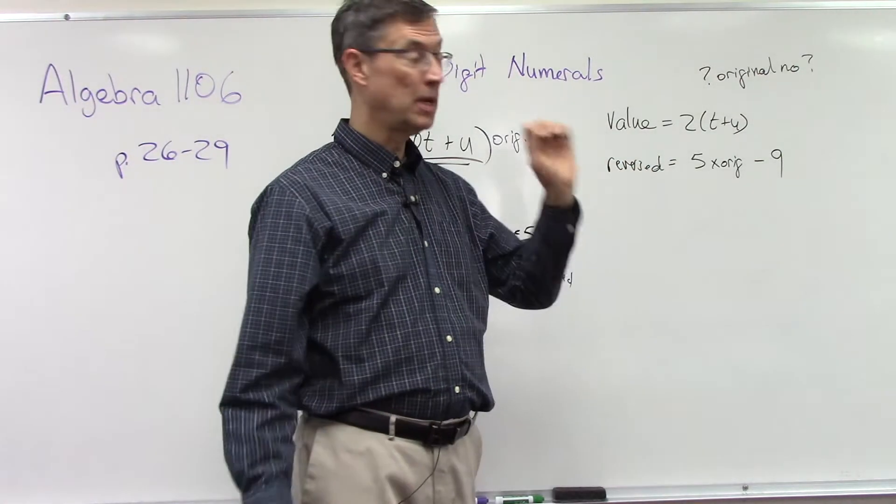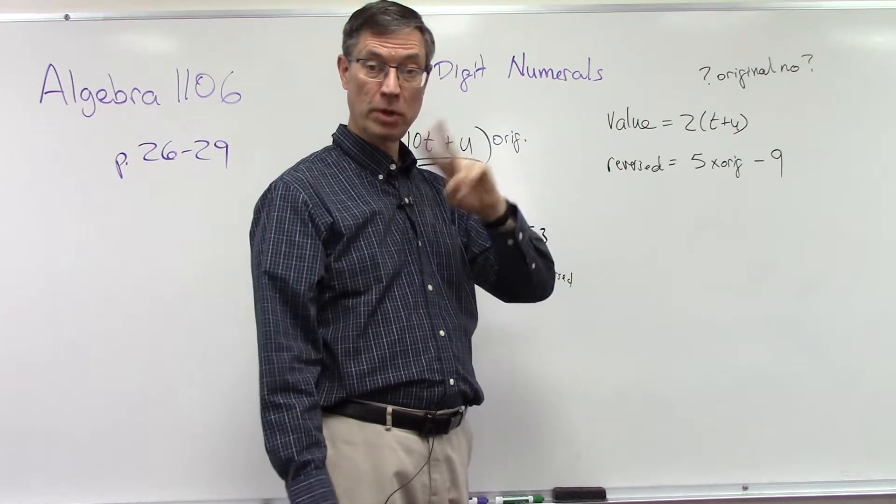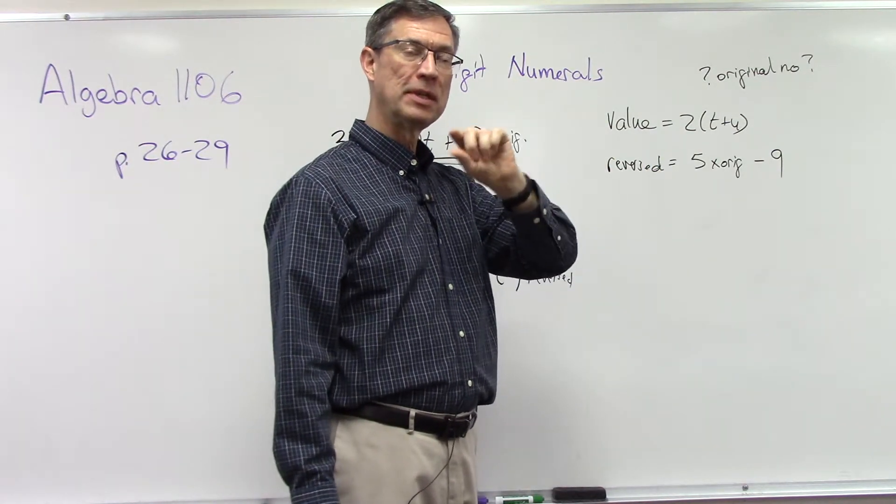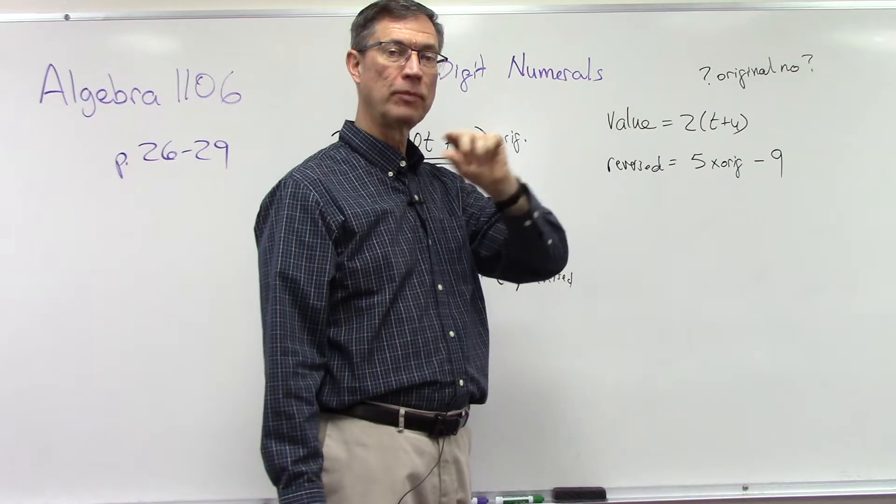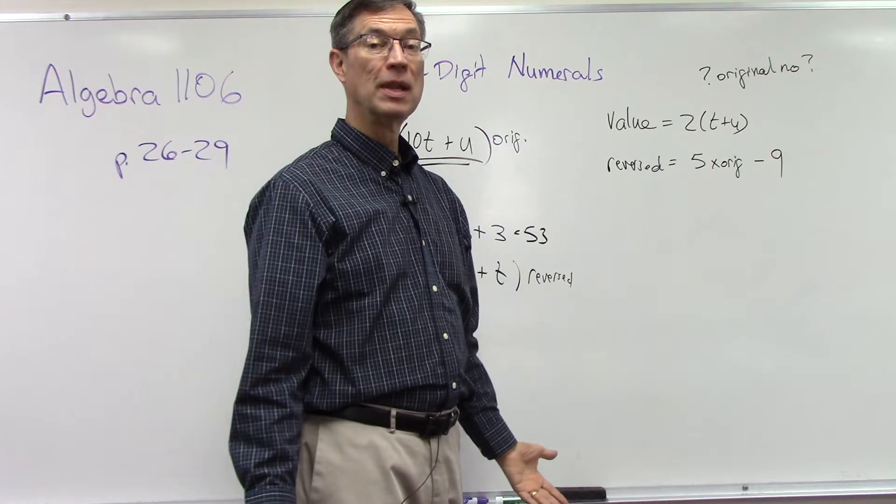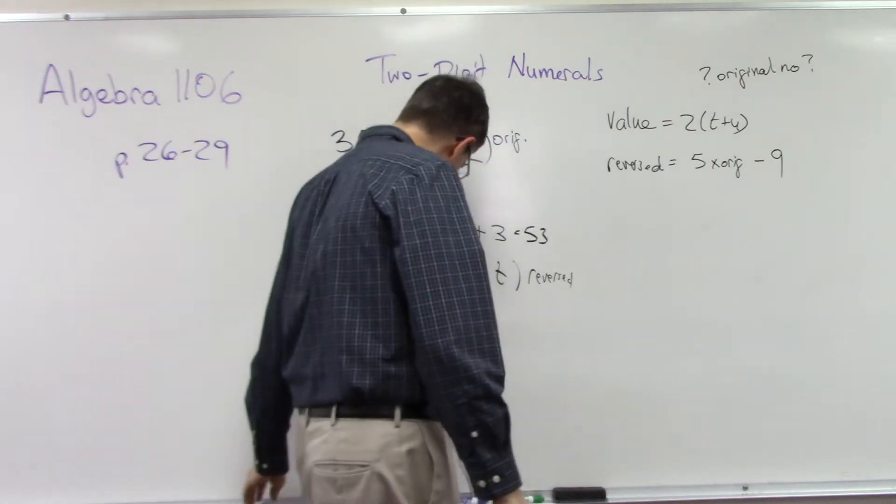But once you do that, then you have two equations and you have two unknowns. Distribute everything out so that you just have one t and one u in the first equation, a t and a u in the second equation. And then you can either do substitution or elimination. And if you forget how to do that, you can look back at one of the previous paces or lessons.